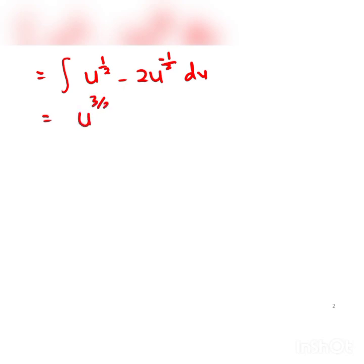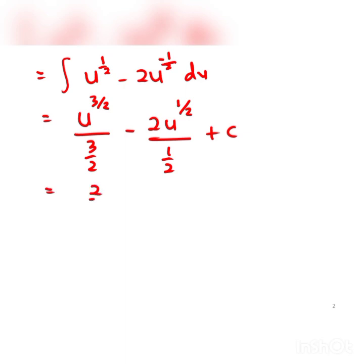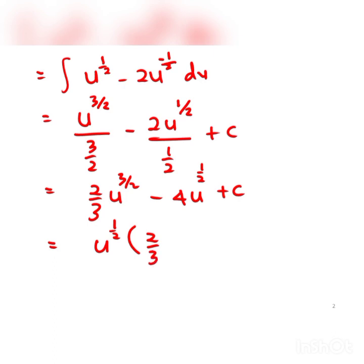Integrating, we get u to the power of 3/2 over (3/2) minus 2u to the power of 1/2 plus c. We then simplify by factoring u to the power of 1/2 outside, giving us 2/3 times u to the power of 1/2, and collecting remaining terms.